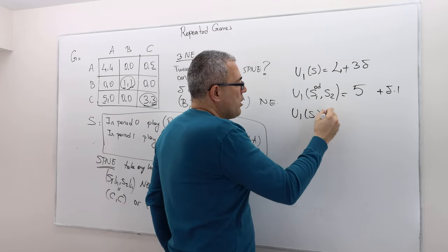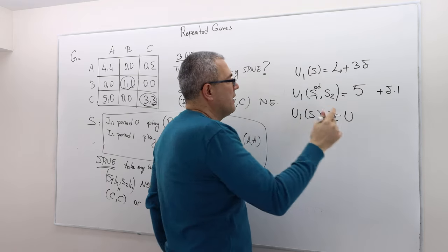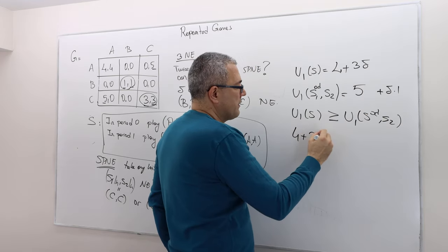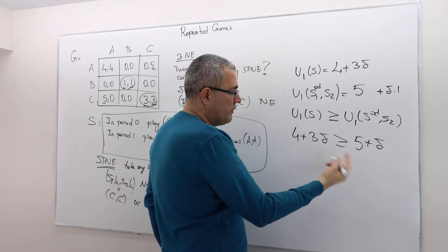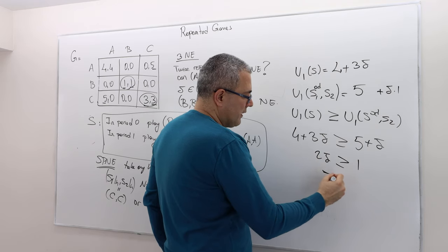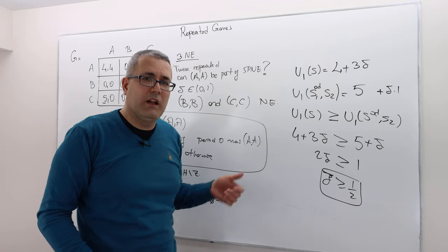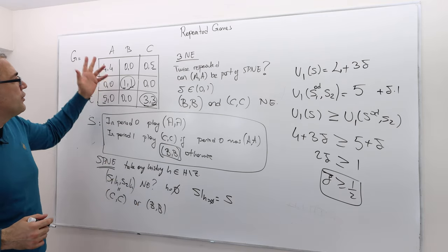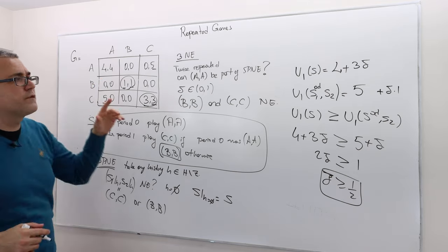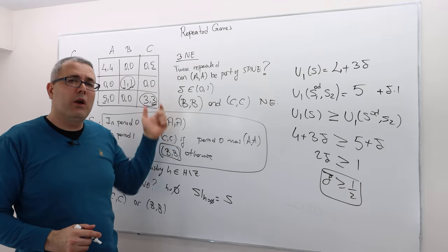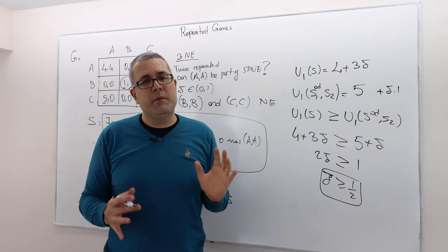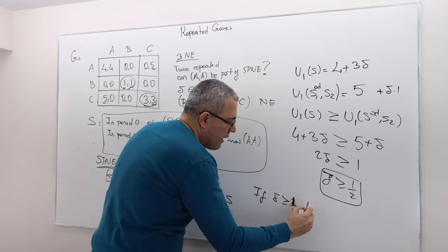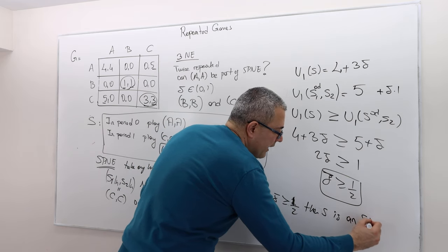We want the strategy to be a Nash equilibrium, so we need 4 + 3δ ≥ 5 + δ, which gives 2δ ≥ 1, so δ ≥ 1/2. For player two, everything is symmetric — the strategy and payoffs are symmetric — so the same condition holds. Therefore, if δ ≥ 1/2, then S is in fact a subgame perfect Nash equilibrium.